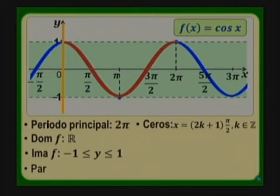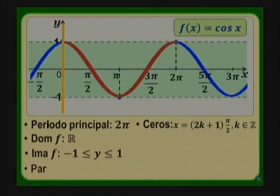Los ceros de la función coseno se encuentran en pi sobre 2 y en 3pi sobre 2, donde el gráfico corta al eje de las x. De manera general, a partir de pi sobre 2, cada pi, vamos a obtener un cero. Esto se puede escribir como los múltiplos impares de pi sobre 2: (2k+1)·(pi/2), con k perteneciente a Z. La función tiene infinitos ceros dado su carácter periódico.